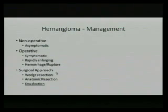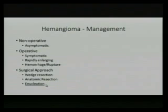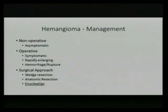The surgical approach for hemangiomas could be wedge or anatomic resection, but most commonly — and this has appeared on ASPIRE exams — the best modality is enucleation, because you don't have to perform a formal liver resection. As long as you can enucleate, that is preferred. The recurrence rate is similar to resection.